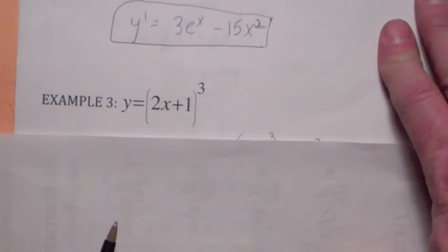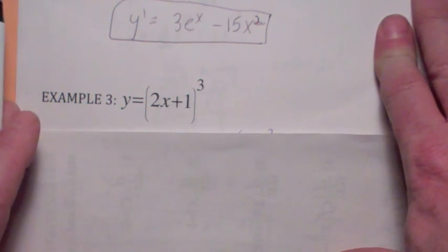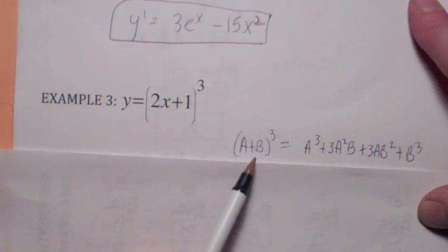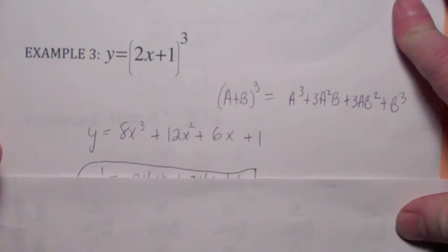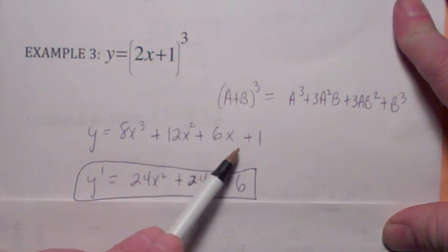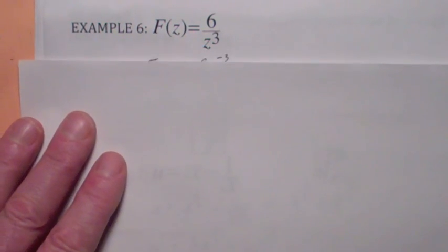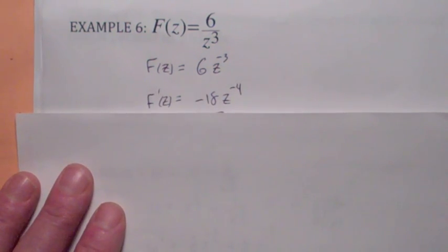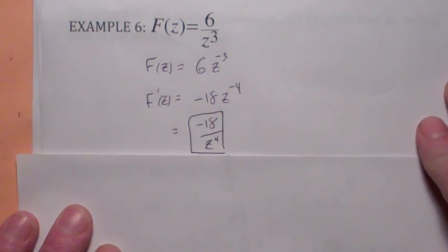This one is a little bit sneakier. We don't know how to take the derivative of a function raised to a power — only x to a power — so you have to multiply it out. It's helpful to know the formula for multiplying out a binomial cubed. Once you multiply it out, the derivative is the easy part: you get 24x squared plus 24x plus 6. To differentiate the next function, move z to the 3rd up to the top as z to the negative 3rd, then use the power rule: negative 18z to the negative 4th, which simplifies to negative 18 over z to the 4th.